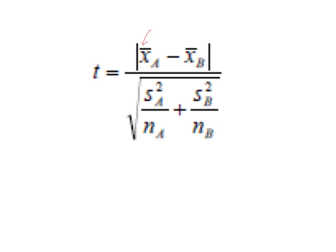In the unpaired t-test formula: the first x-bar is the mean of your first set of data, the second is the mean of your second set. The s² values are the standard deviation squared for each set, and the n values are the number of repeats for each set. This means you can carry out the calculation even if you had different numbers of repeats for each category.